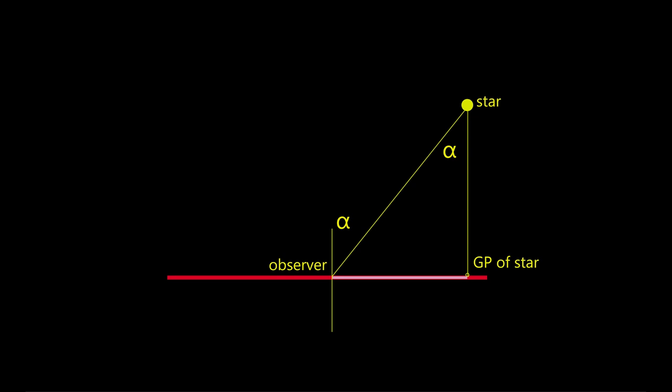You could do that by solving the sine of the zenith angle alpha, that is the distance to the GP divided by the distance to the star. But you don't know the distance to the star.